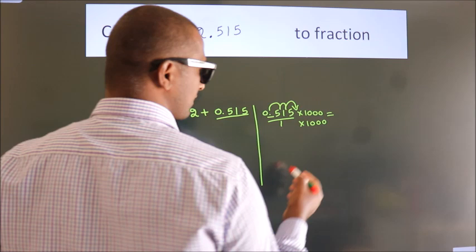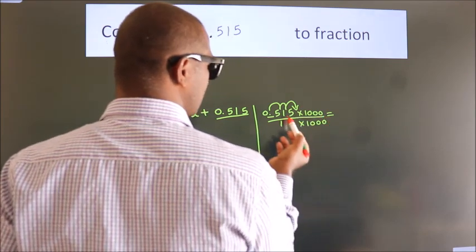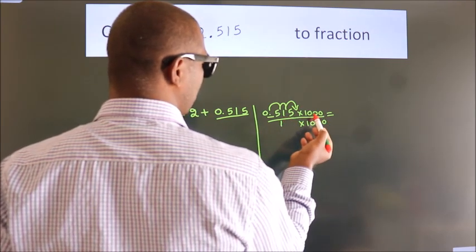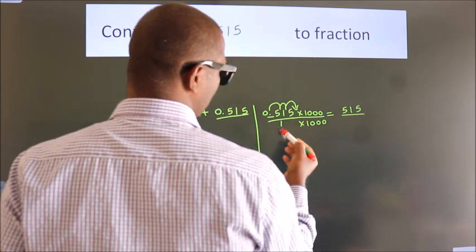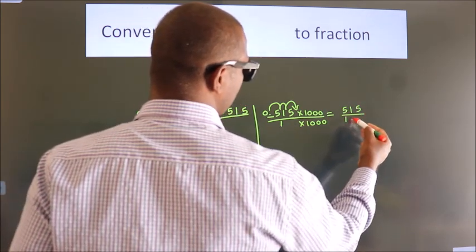Next, 0.515 into 1000 is 515. 1 into 1000 is 1000.